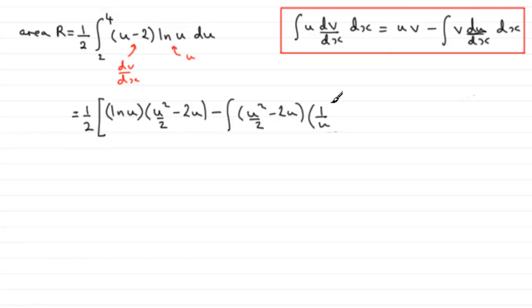This part here. U was the natural log of U for this question so we differentiate natural log of U and we get 1 over U. And this is all integrated now with respect to U and we close that off and we've got our limits between 2 and 4.